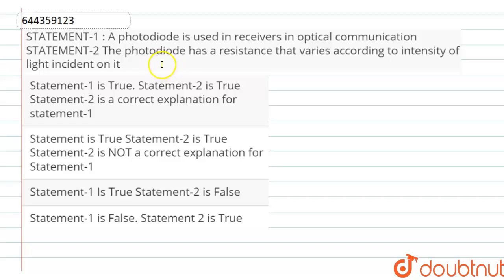Hello dear students, here is an assertion and reason type of question in which statement one is: a photodiode is used in receivers in optical communication. And statement two is: the photodiode has a resistance that varies according to the intensity of light incident on it.